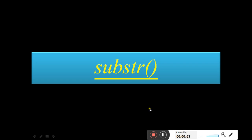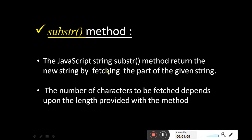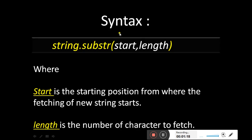We will start with the previous topic, substr, because substr and substring are mostly similar. There is a similarity between the substr and substring methods. In the substr method, we fetch a part of the string from the given string. There are two parameters: the first is the starting index number — the position from where the string is to be fetched — and the second parameter is the length, or the number of characters from the string which you want to fetch.